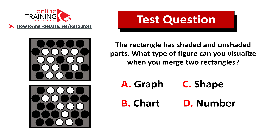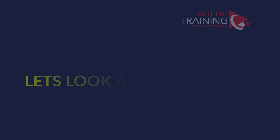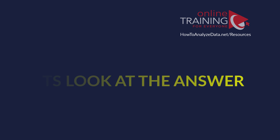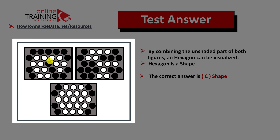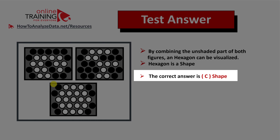Give yourself 10 to 15 seconds to see if you can come up with the solution on your own. Upon combining, you can imagine the hexagon, because hexagon is the shape in the bottom rectangle. Because hexagon is the shape, the correct answer here is choice C.